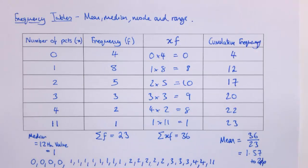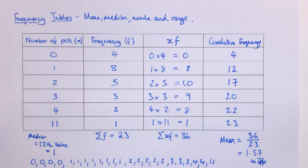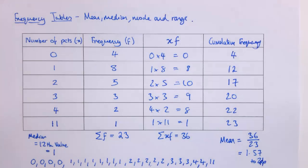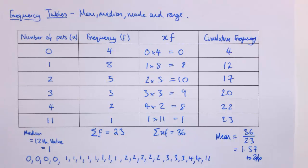If we had an even number of data — say only 22 — we would average the 11th and 12th pieces of data in the same way. If they were in different classes we'd average them; if they were the same value we'd just take that value. So that's the mean and the median.